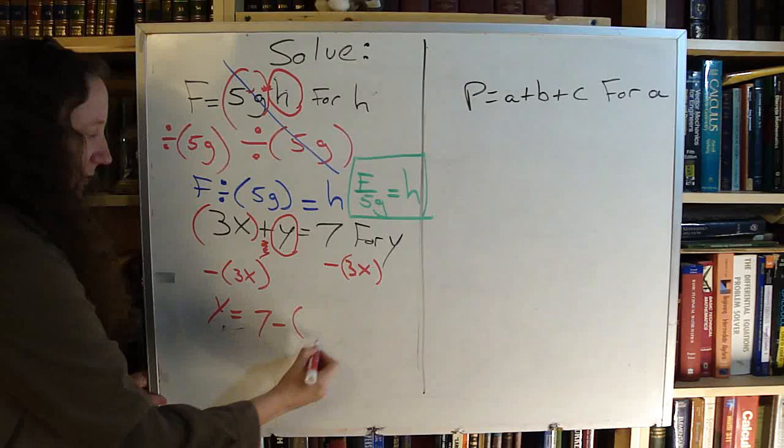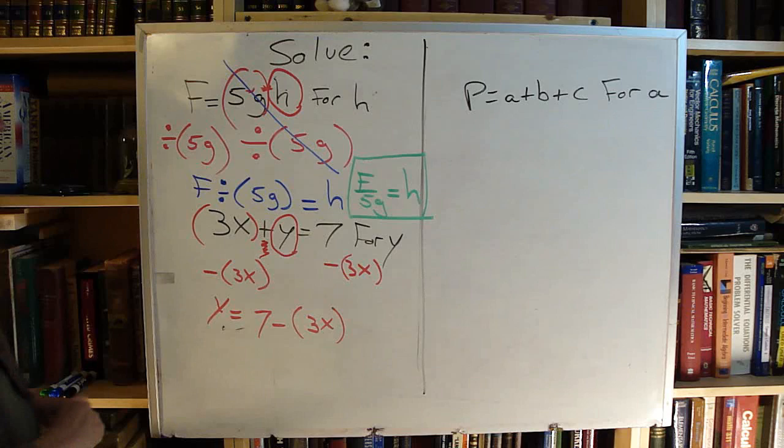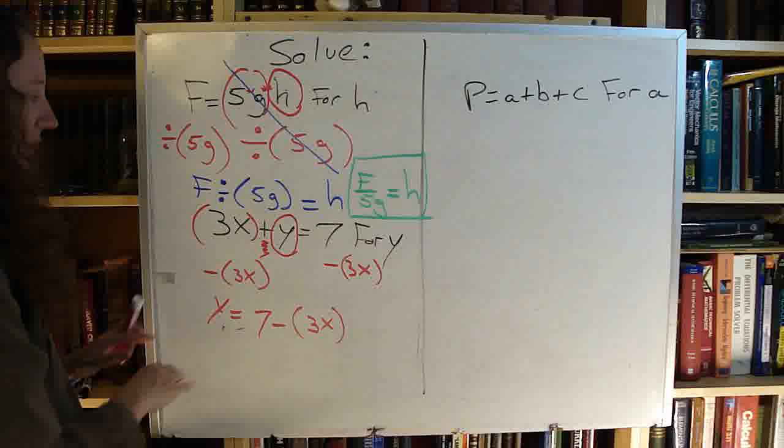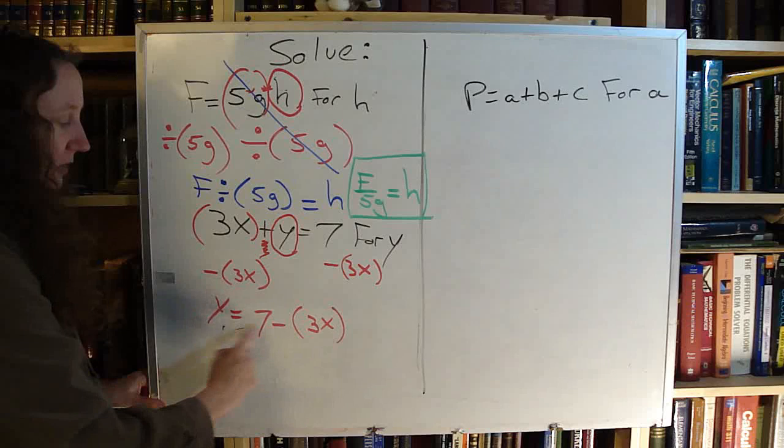Now I have y equals 7 minus 3x. I put the parenthesis in to tell me that that is one group. That is not two separate things.